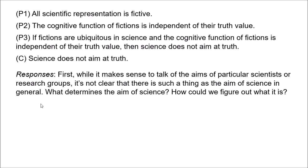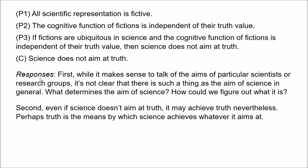A second problem is: let's assume that this talk of the aim of science is reasonable, and let's assume that science doesn't aim at truth as this argument concludes. Well, why shouldn't science achieve things beyond what it aims at? Whenever you aim to do something, you often end up achieving other things as well, just as a byproduct. Presumably the same could be the case for science — even if it doesn't aim at truth, it may achieve truth nevertheless.